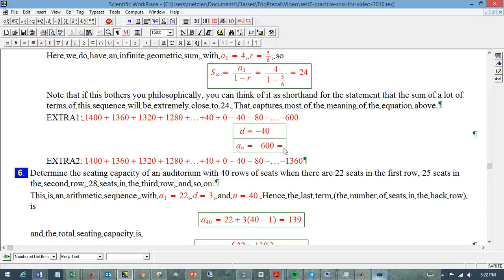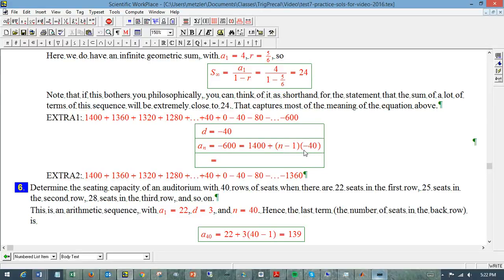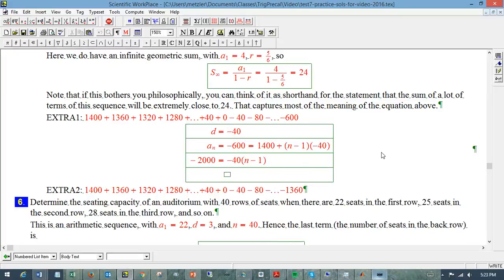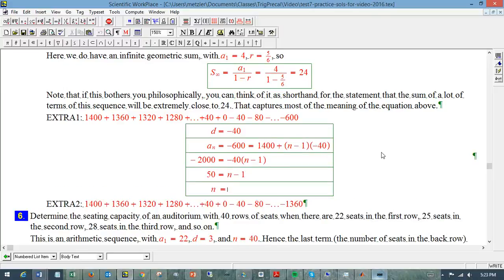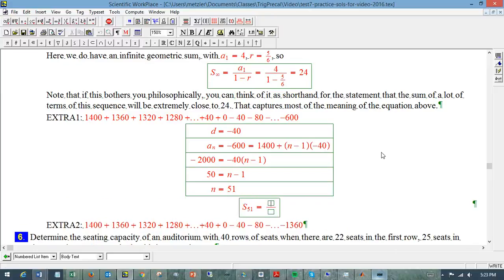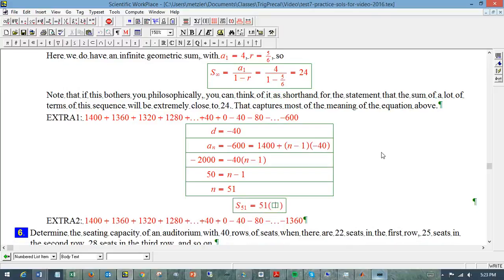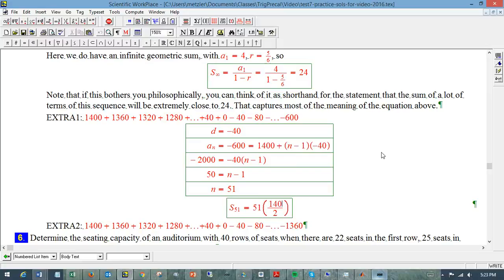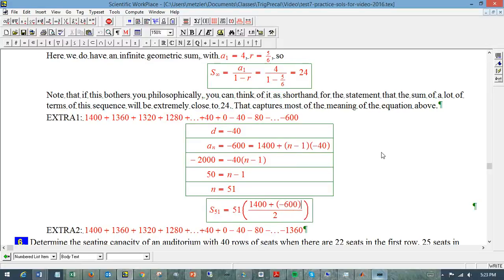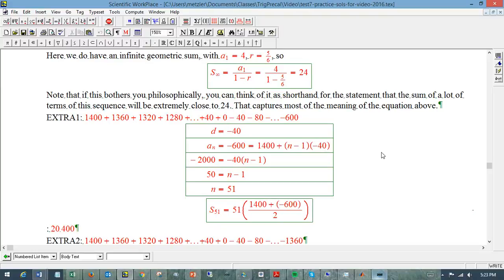So, we need to just go ahead and say, let's say a sub n is that last term, minus 600, that should be a sub 1, which is 1400, plus n minus 1, and that's a mystery, times minus 40. And we saw this in a previous example. When that's negative, you've got to be careful. So I'm going to go ahead and subtract 1400 from both sides, so minus 2000 is minus 40 times n minus 1. I'm not going to multiply that out yet. 50 equals n minus 1, n equals 51. So, secretly, there are 51 terms in that sequence. And so the sum at stage 51 is going to be 51 over 2. Number of terms times cheesy cheating average. Be careful, that's a plus minus 600. And that turns out to be 20,400.